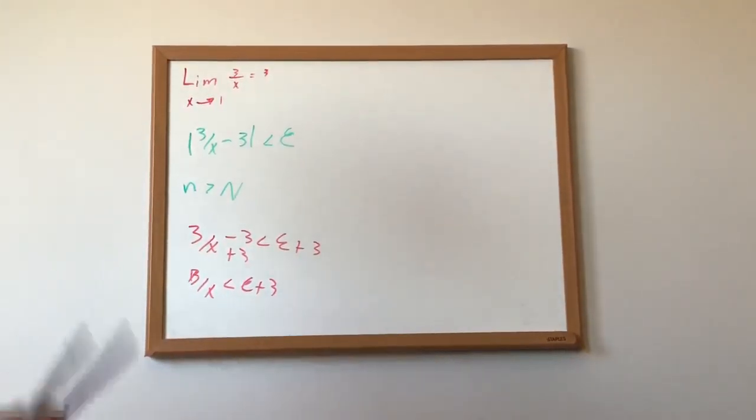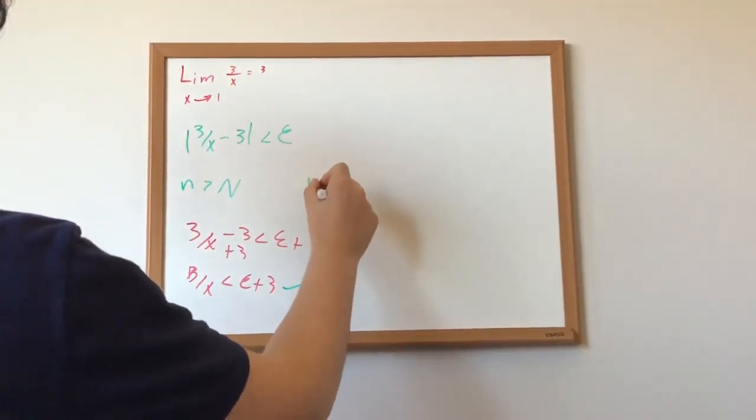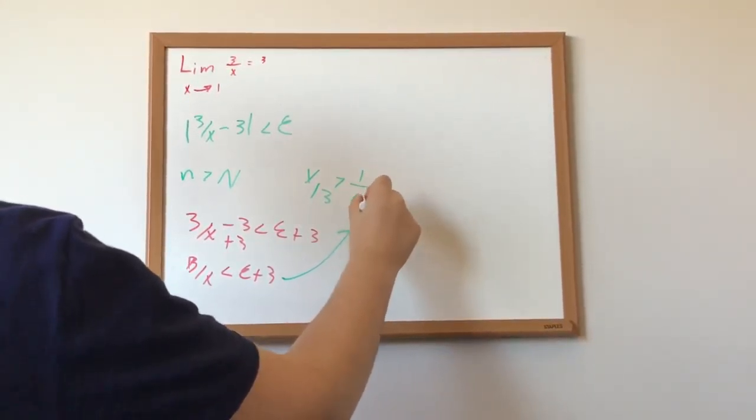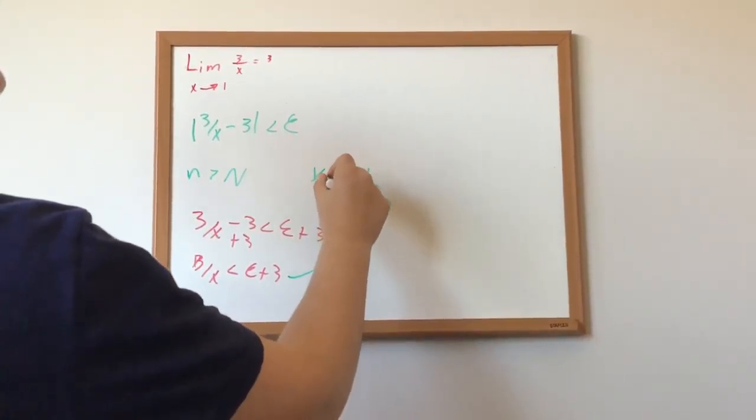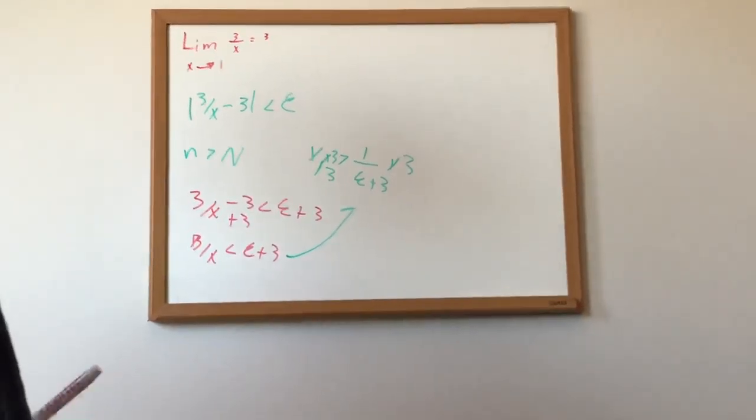And then we can take the reciprocal of both sides, and we get x over 3 is greater than 1 over epsilon plus 3. We can multiply both sides by 3 to get rid of 3 in the denominator on the left-hand side.